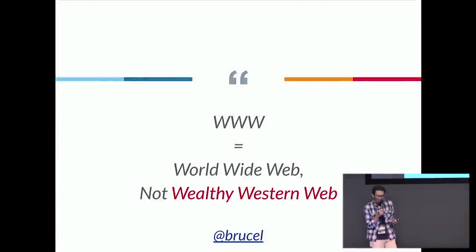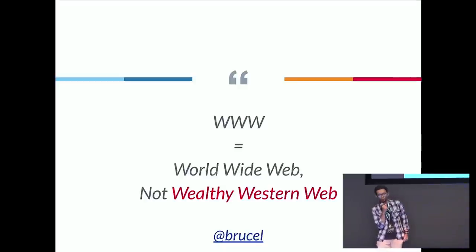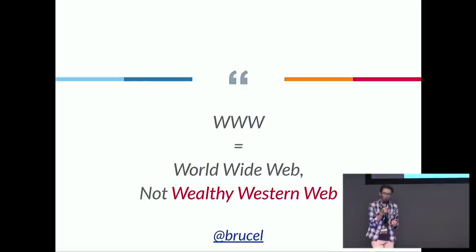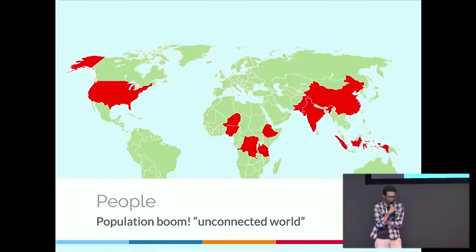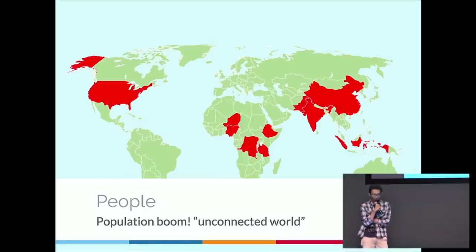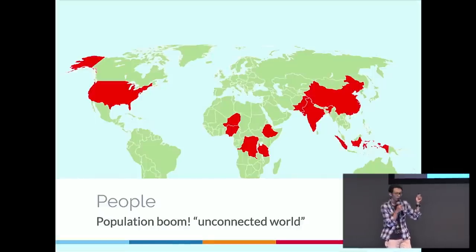So why do we call this the World Wide Web, but we just make it for the wealthy western web? That's not my quote — it's from Bruce Lawson. I'm not biased, but I agree with him. The term World Wide Web should be encouraged more broadly. And why does population matter? By 2050, we will have a population boom — a lot of people multiplying, having kids every year, every day. It will be an unconnected world because India, China, and Indonesia will have massive populations, and I don't know if our infrastructure and network coverage will catch up really fast by 2050.